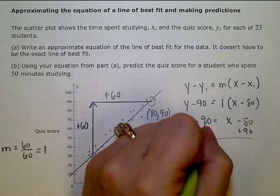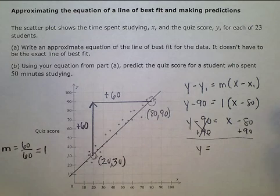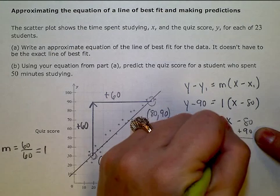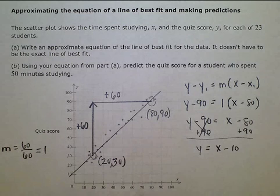So y equals x minus 80 plus 90, which is x plus 10. So the y-intercept is at about 10 here. Remember, it doesn't have to be the exact line of best fit.